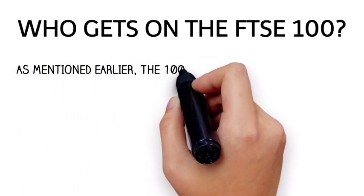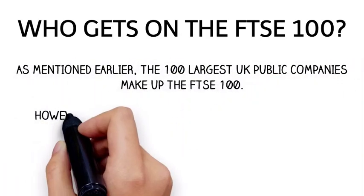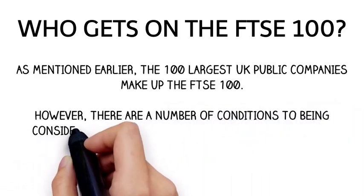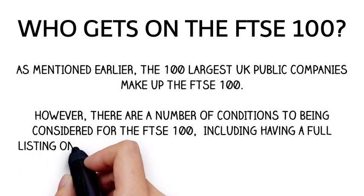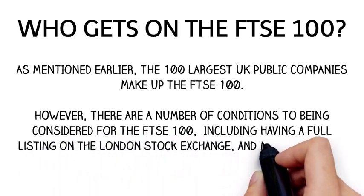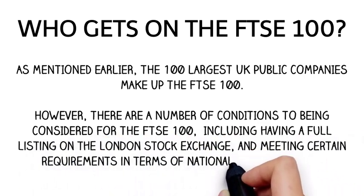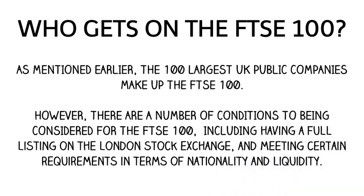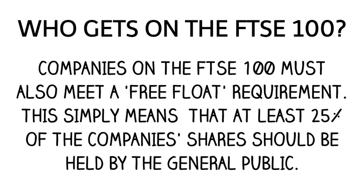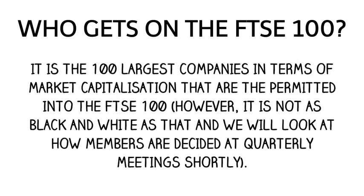Who gets on the FTSE 100? The 100 largest UK public companies make up the FTSE 100. However, there are a number of conditions to being considered, including having a full listing on the London Stock Exchange and meeting requirements in terms of nationality and liquidity. Companies on the FTSE 100 must also meet a free float requirement, meaning that at least 20% of the company's shares should be held by the general public. It is the largest companies by market capitalization that are permitted in, though members are decided at quarterly meetings.